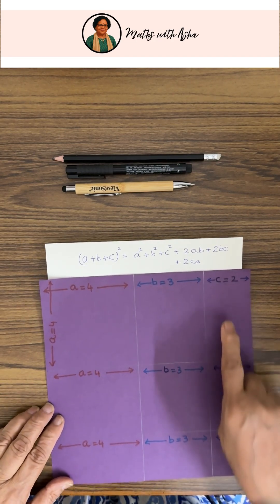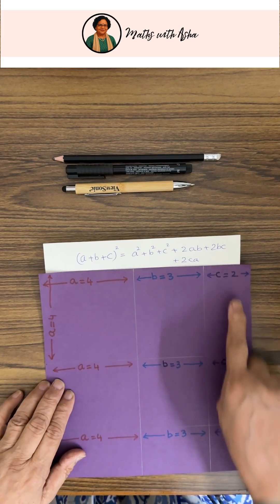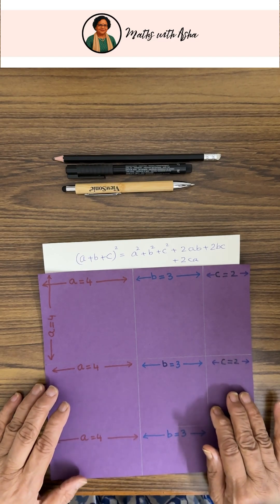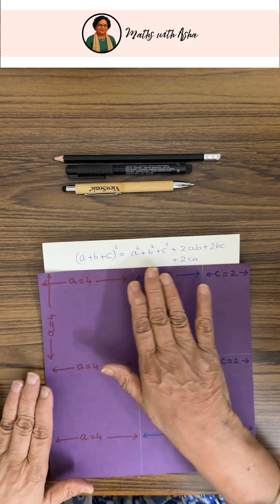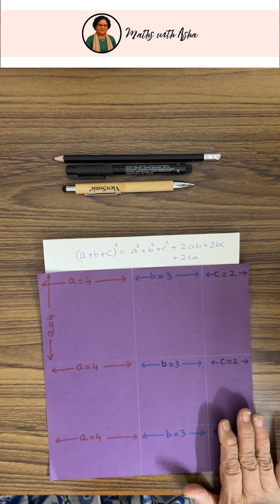So we draw a square with side a + b + c. So this is your square with side a + b + c, and we will show this is the left hand side, and we will show that we can fit the right hand side in it.